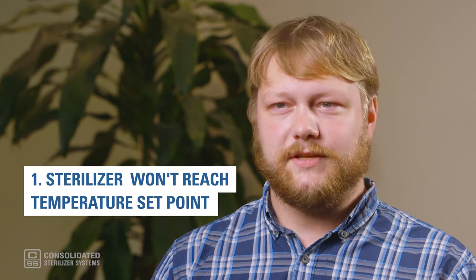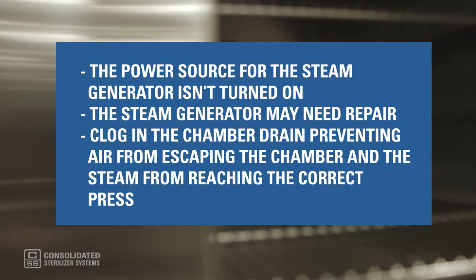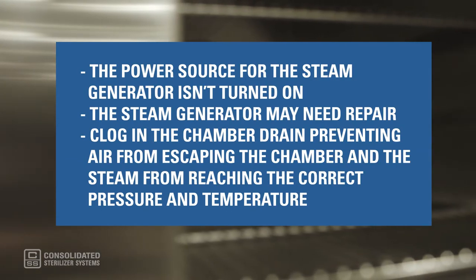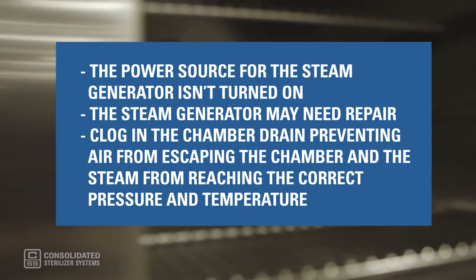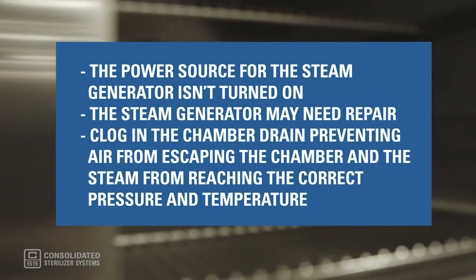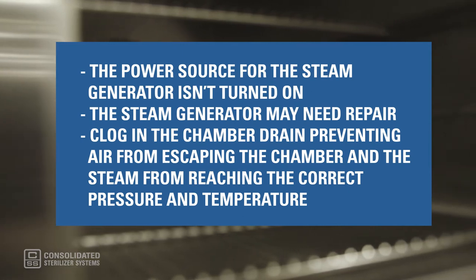Problem number one: the sterilizer won't reach the temperature set point. There are a few reasons why this might happen. Perhaps the power source for the steam generator isn't turned on, or the steam generator may need repair. Another option is that there's a clog in the chamber drain preventing air from escaping the chamber and the steam from reaching the correct pressure and temperature. Or the temperature the user has entered exceeds the autoclave's maximum temperature allowance.